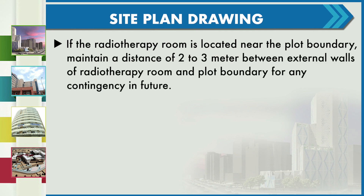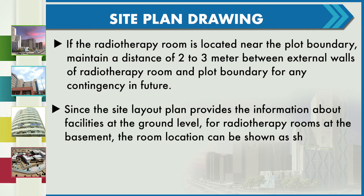If the radiotherapy room is located near the plot boundary, maintaining a distance of 2 to 3 meters between the external wall of the radiotherapy room and the plot boundary is required for any contingencies in the future. Since the site layout plan provides information about facilities at the ground level, for radiotherapy rooms at the basement the room location can be shown as shaded areas.